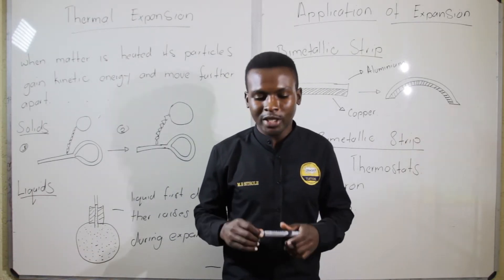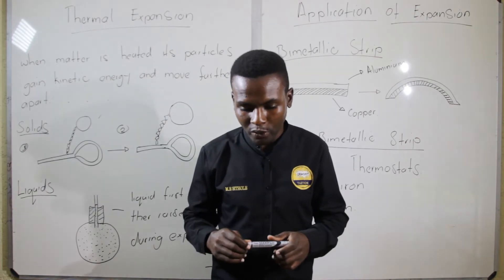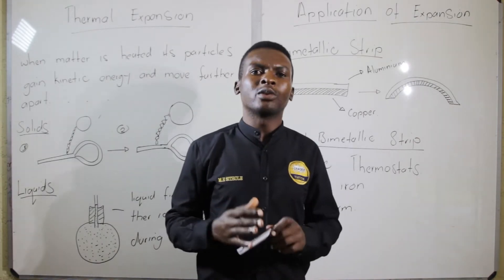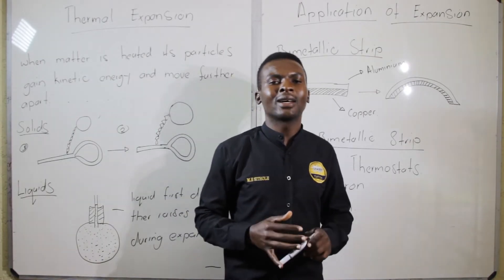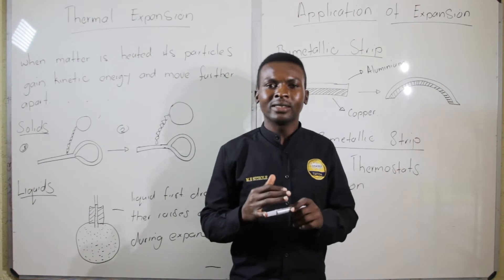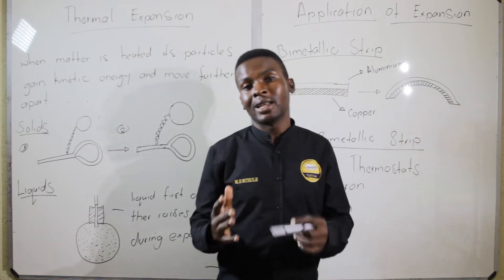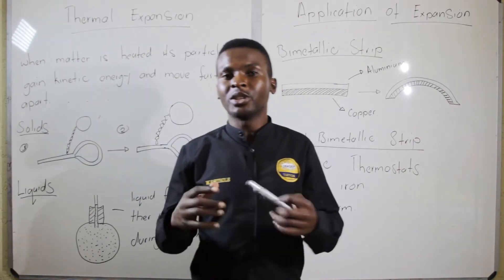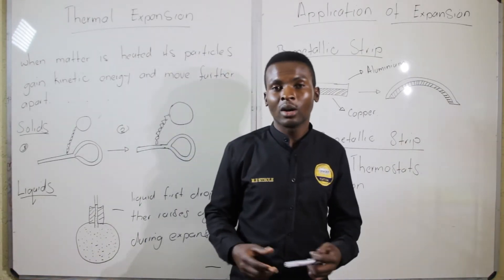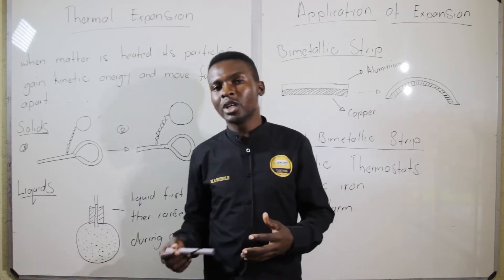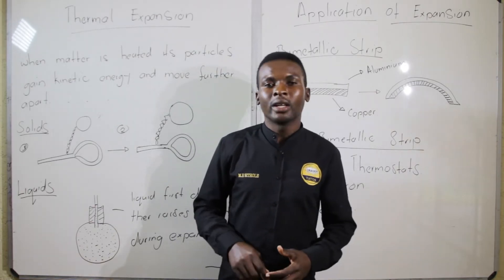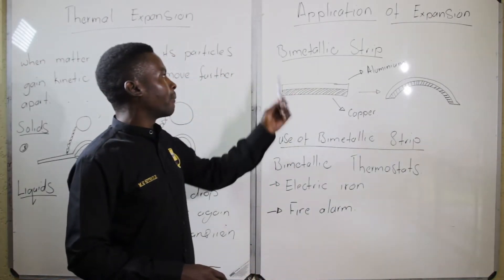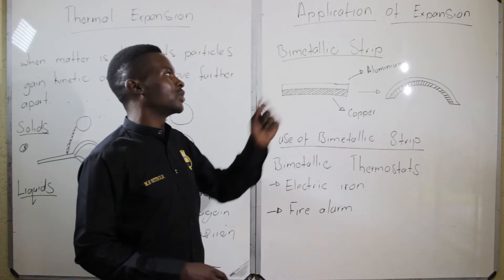We use expansion most of the time in thermostats. These are liquid-in-glass measuring instruments, or we use them in a bimetallic strip. Now I'm going to talk about the bimetallic strip.